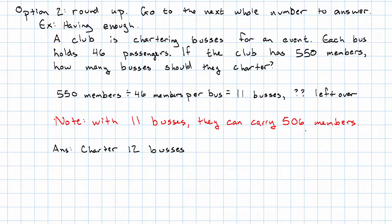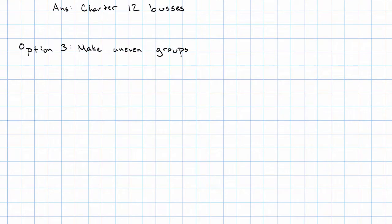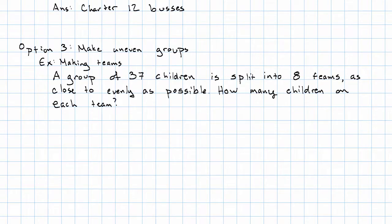Okay. What other options do we have? Sometimes, the best option is to just make slightly uneven groups. An example of a situation where this might come up is where you're making teams. So maybe we have a group of 37 children, and we want to split them into 8 teams. And we want the teams to be as close to even sized as possible. How many children should we put on each team?